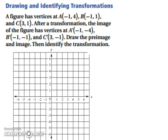Let's step it up a notch. Let's try drawing and then identifying the transformation. So a figure has vertices at A is at (-1, 4), B is at (-1, 1), and C is at (3, 1). And then after a transformation, your image is at vertices A prime, which is (-1, -4), B prime is at (-1, -1), and C prime is at (3, -1).